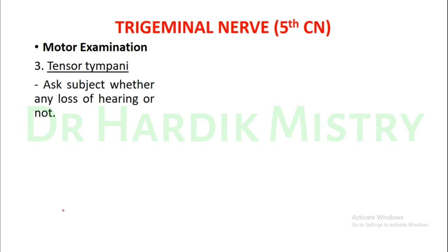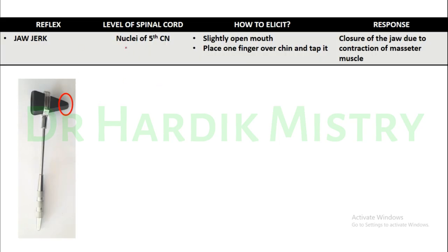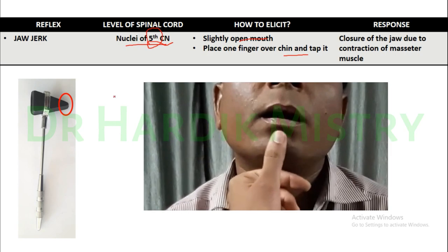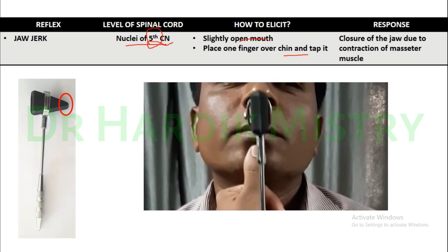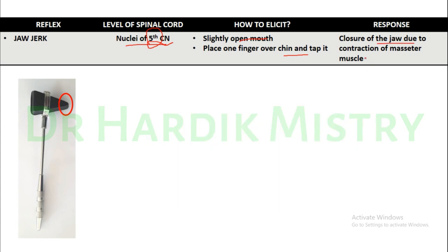Next in the motor examination, we include the tensor tympani muscle — ask the subject whether there is any loss of hearing. For the jaw jerk, this is a cranial reflex at the level of the fifth cranial nerve nuclei, the trigeminal nerve. Tell the subject to slightly open the mouth, place a finger over the chin and tap it with the pointed end of the clinical hammer. The response will be closure of the jaw due to contraction of the masseter muscle.